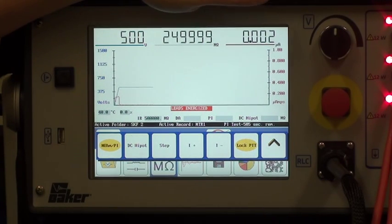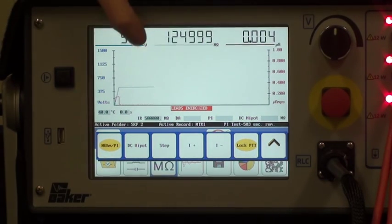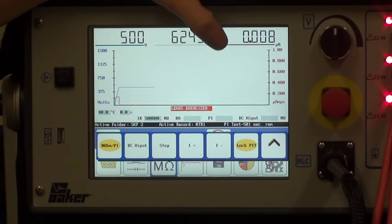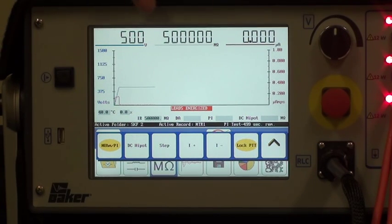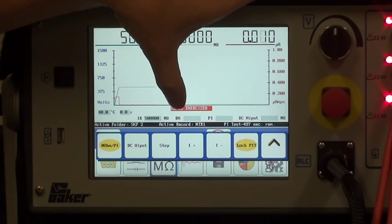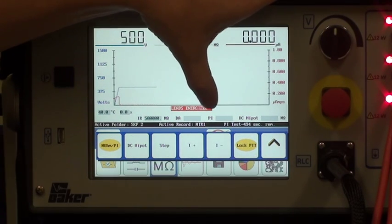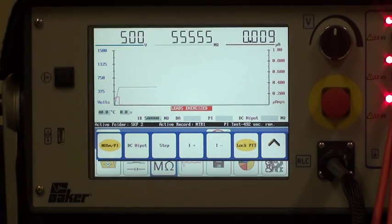For this particular test, we don't have time to run through all of the tests to be practical. But that's what would happen once these time values were reached. These windows here would be populated with the index reading from the dielectric absorption or the polarisation index.